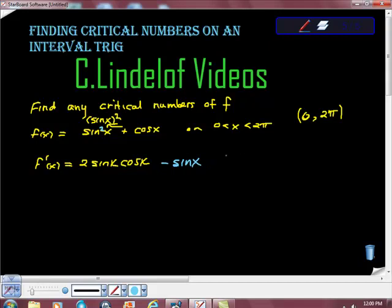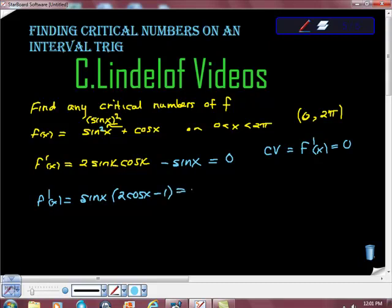So here's our whole derivative. And what I'd say to my AP reader is that I want this thing to equal 0. So I'd say CVs equal f'(x) equal to 0. So what I'm going to do here is factor a little bit and pull sine out. So f'(x) is the same as sine x times (2 cosine x minus 1) equal to 0.